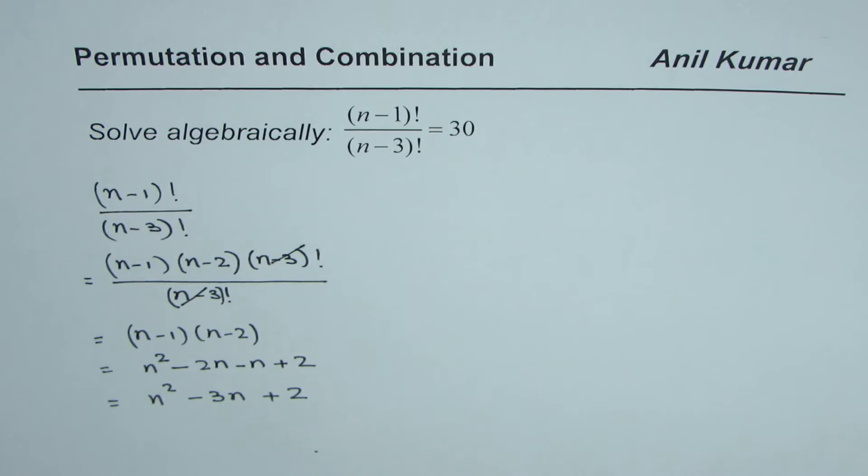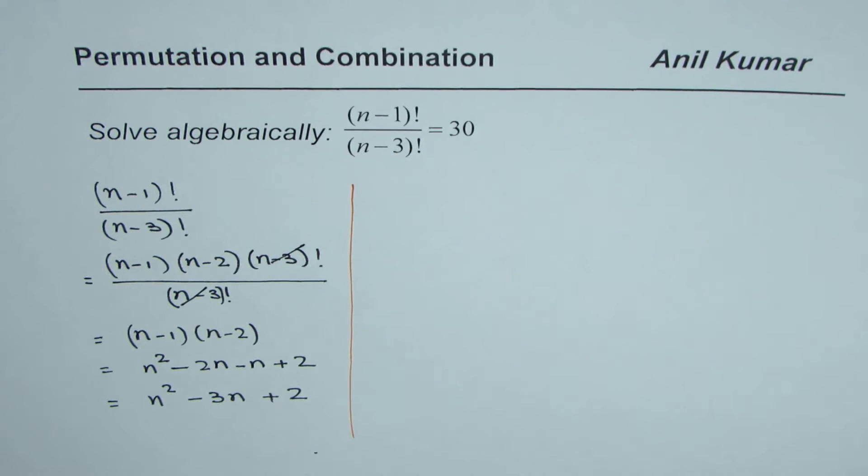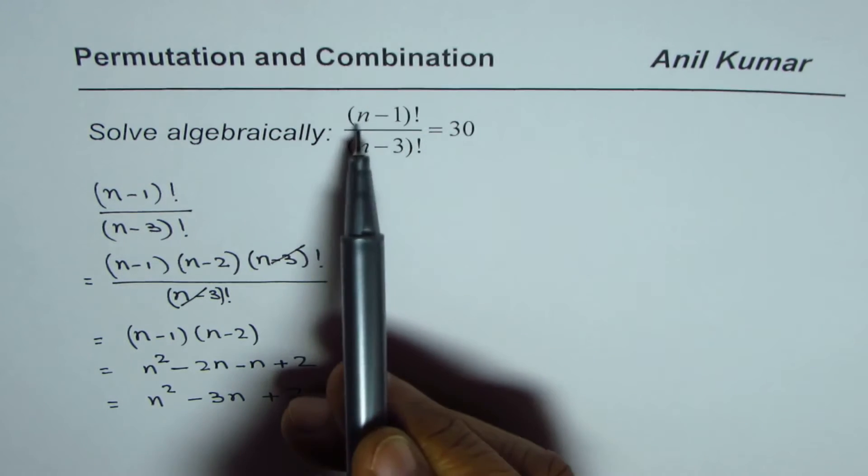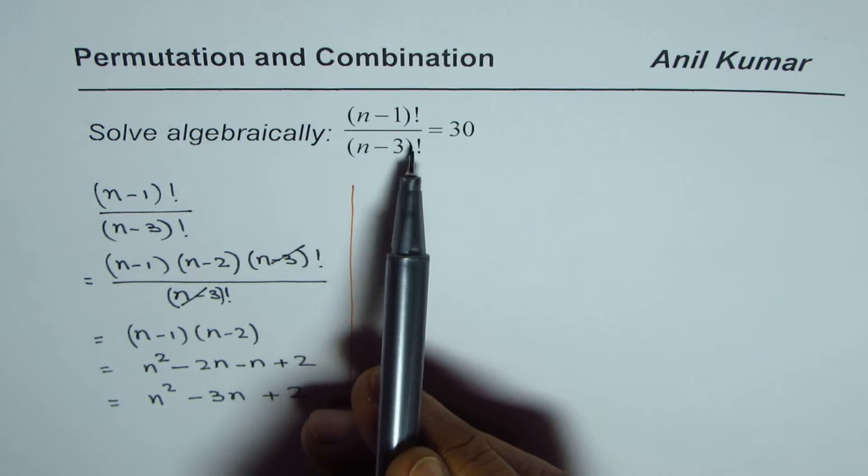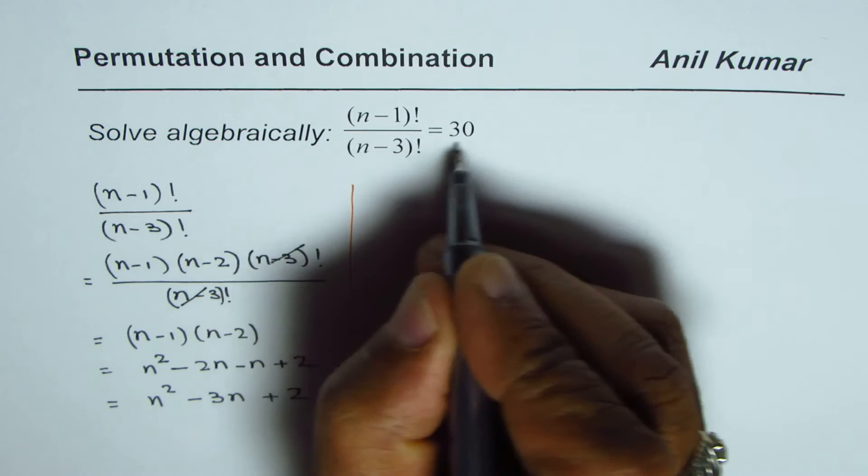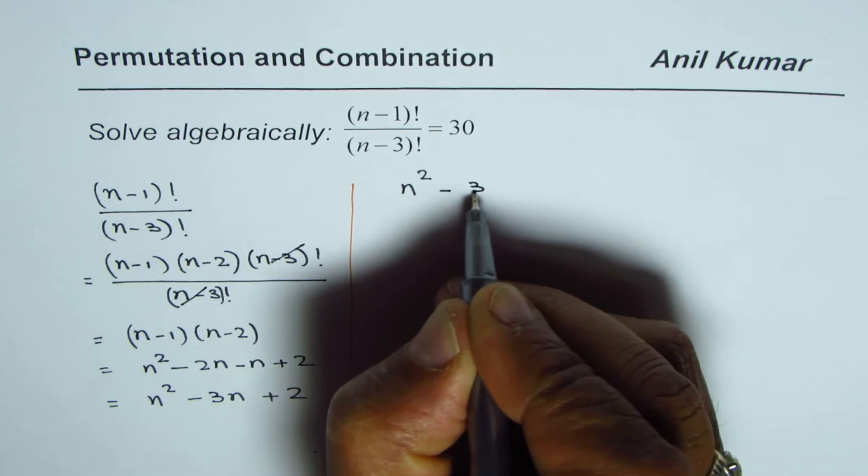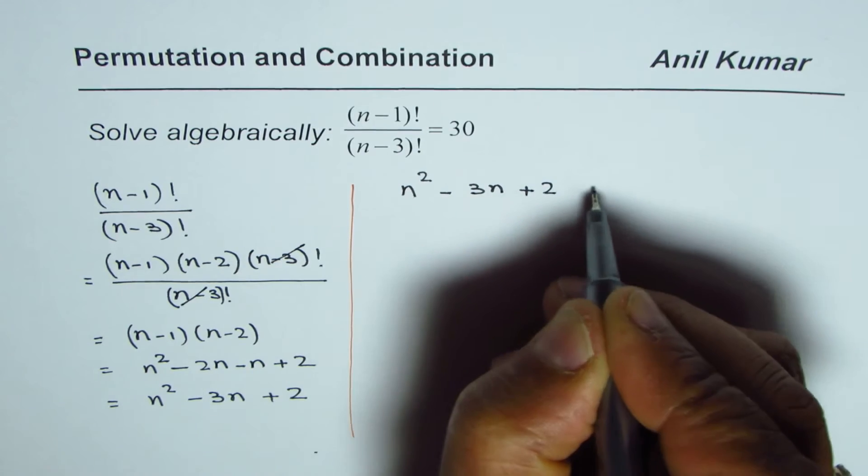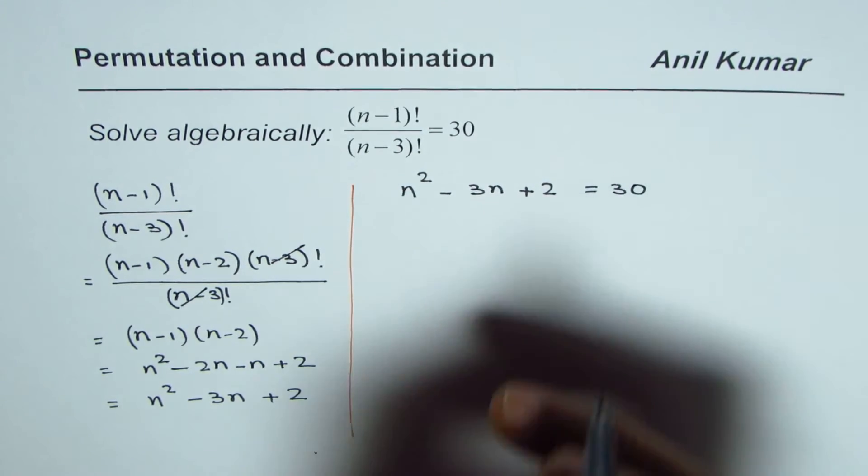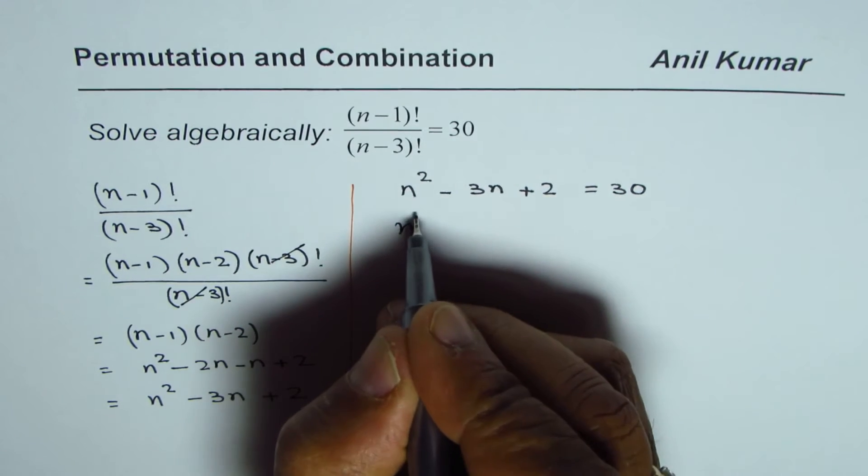Now let me solve the question. Instead of (n-1)! over (n-3)!, we can write n² minus 3n plus 2. So we'll write this equation as n² minus 3n plus 2 equals 30.